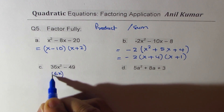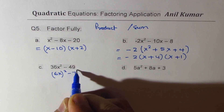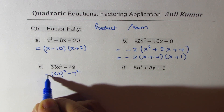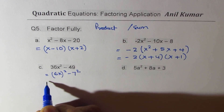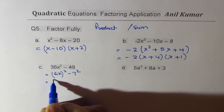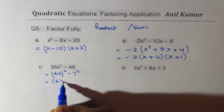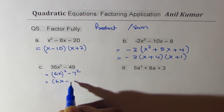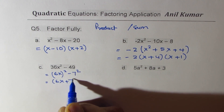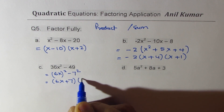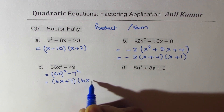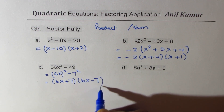This is a difference of squares. We write this as (6x)² minus 7², and we can factor this as (6x + 7)(6x - 7).